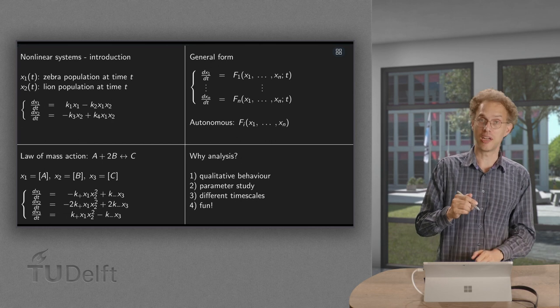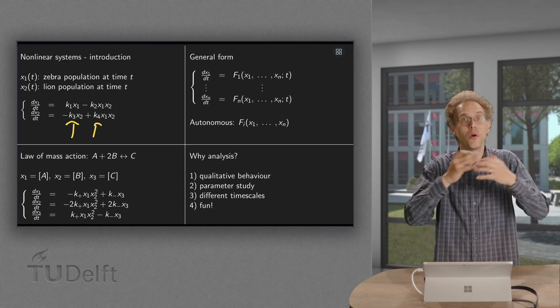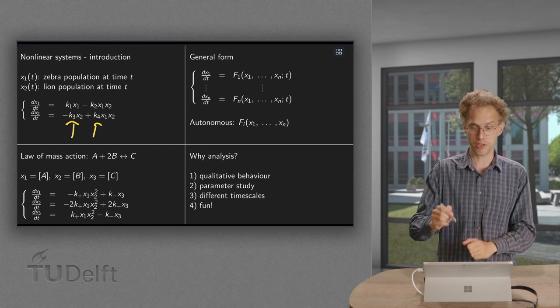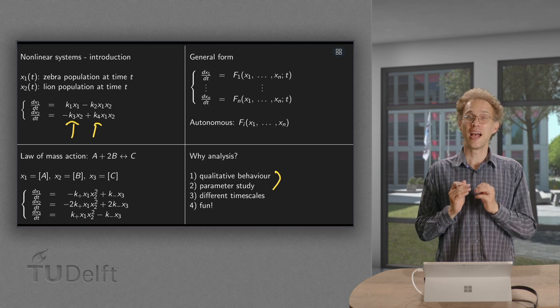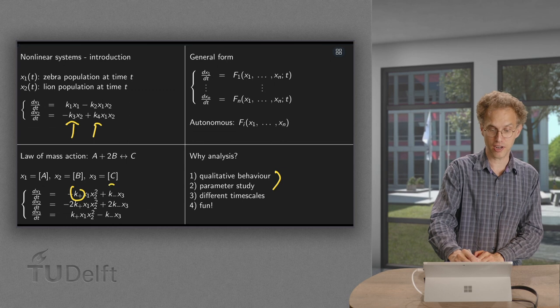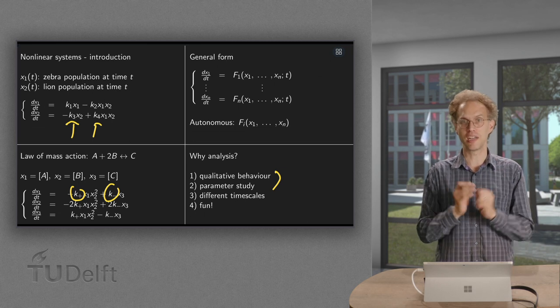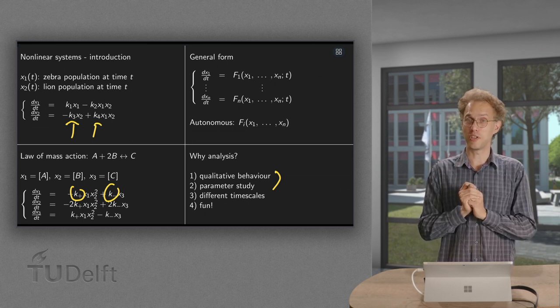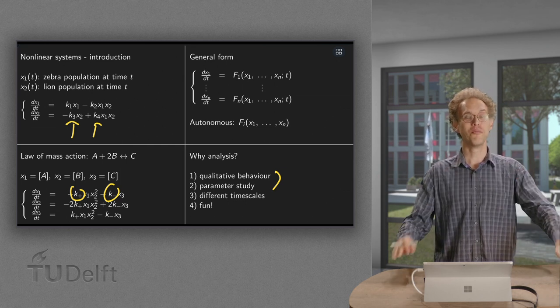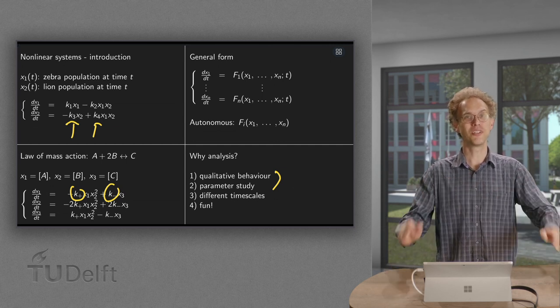First of all, as you can already see, there are a lot of parameters involved here. So we want to know what these parameters do. We like to have an idea of the qualitative behavior as a function of the parameters, to do a parameter study. And third, also important: the size of these parameters can differ, especially in chemistry, by orders of magnitude. Like one is 10^10 and the other is 10^-5. So you can have very different time scales in your problem, and your numerics is not going to like that. And of course, it's very much fun to study these nonlinear systems.